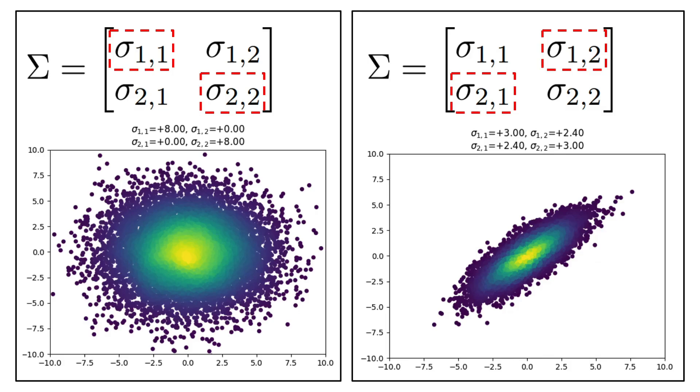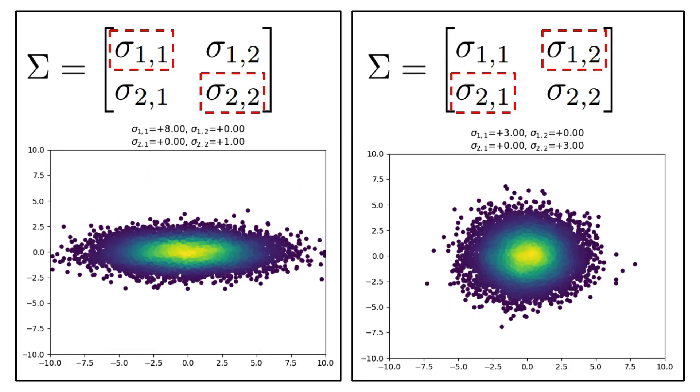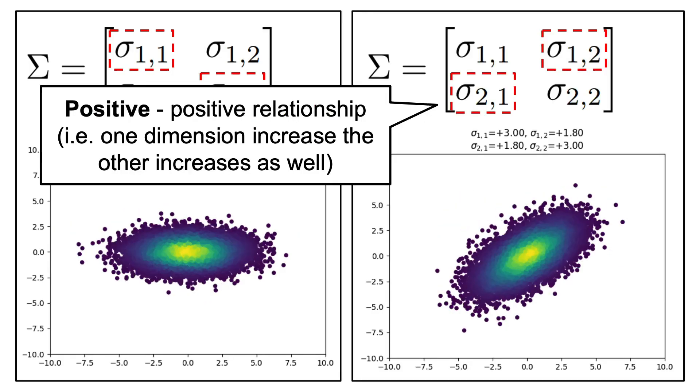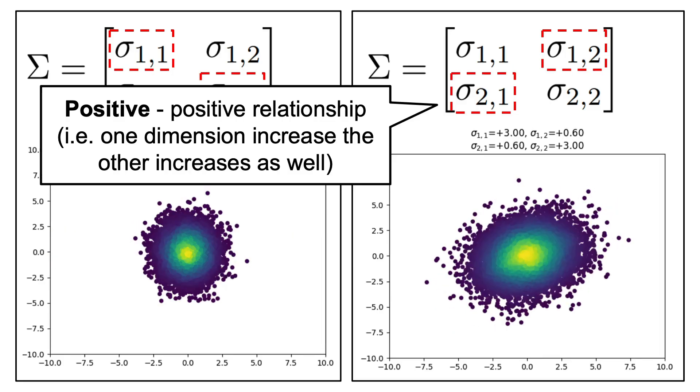This element tells us how two variables change together, or in other words, the direction of their relationship. If the covariance is positive, it means that as one variable increases, the other tends to increase as well.